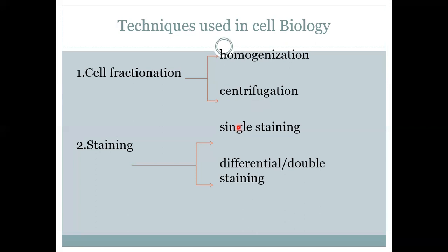The second technique used in cell biology is the staining technique. It is of two types: single staining or simple staining, and differential or double staining. In single staining we use one type of stain, while in differential or double staining we use two types of stain to color different parts of the cell.